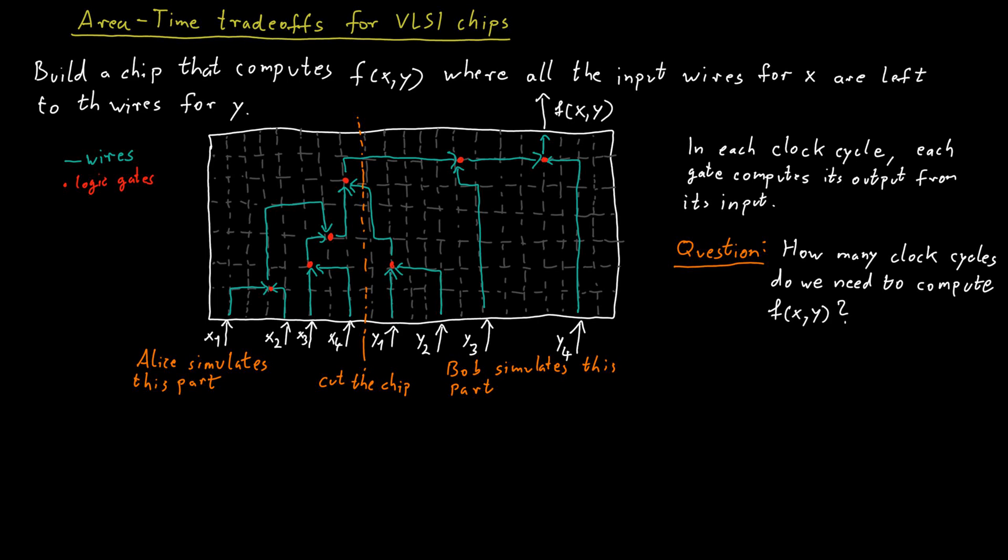In each clock cycle, Alice and Bob can communicate via the wires that go across the left and right part of the chip. If the chip has a height of h, then there are h wires that are able to cross the chip. There's space for h wires to go from the left to the right part of the chip. So the number of bits that Alice and Bob can communicate in each clock cycle is maximum of h.